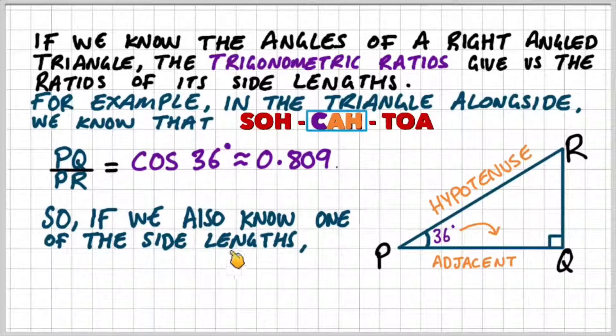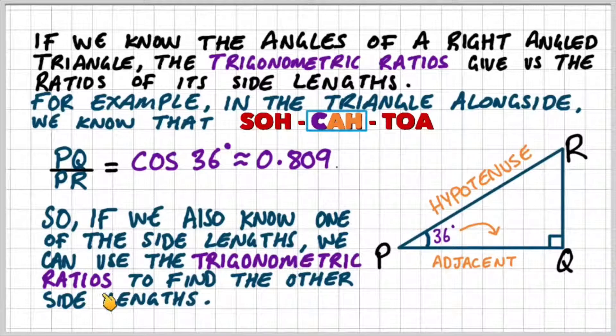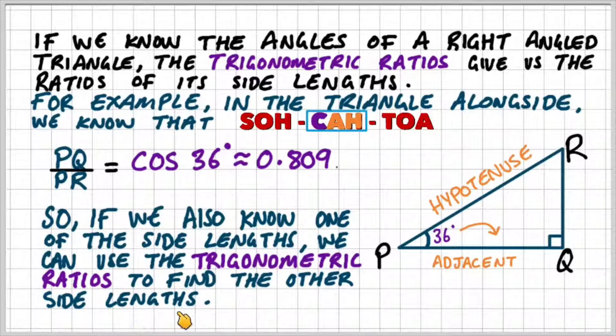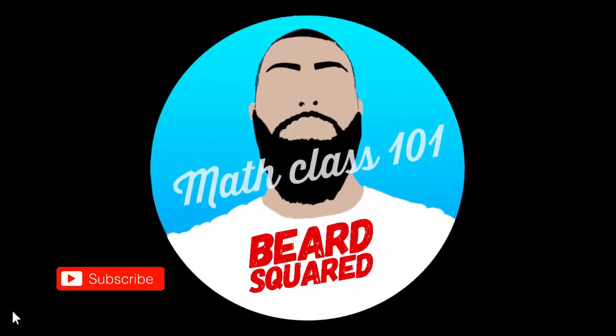So if we also knew one of the side lengths, then we could use the trigonometric ratios to find the other side lengths. As long as we've got one side length and an angle, we can find a missing side length. So let's do an example.